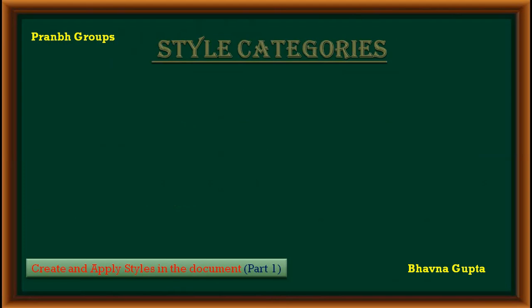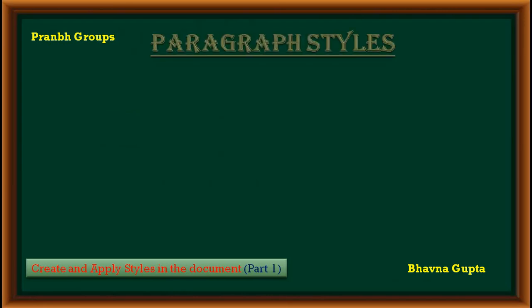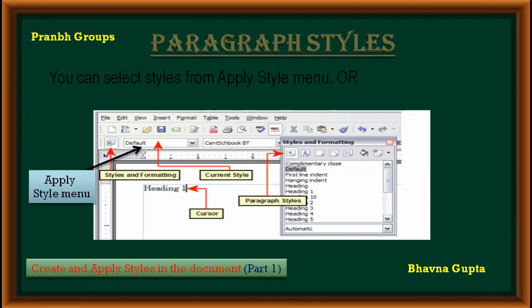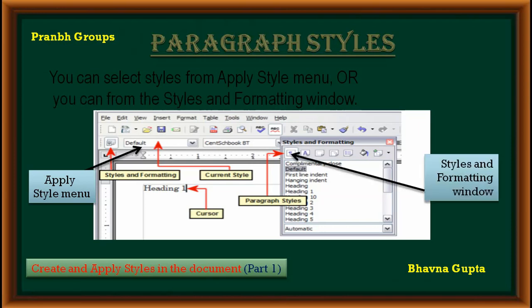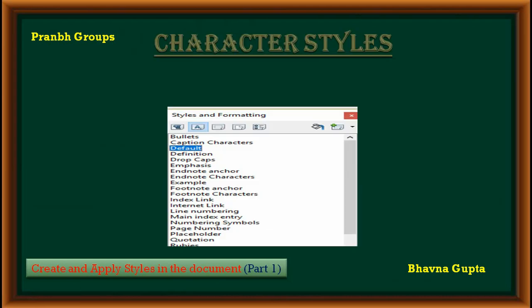There are five style categories: paragraph style, character style, page style, frame style, and list style. Firstly, we discuss paragraph style. When a paragraph style is in use in a document, you can select it from the Apply Style menu and also from the Style and Formatting window — click on the desired style and then press Enter to apply the highlighted style.